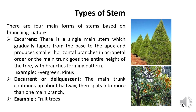There are four main forms of branching: excurrent, decurrent, colic and culm. In excurrent branching, there is a single main stem which gradually tapers from base to apex and produces smaller horizontal branches in acropetal order — acropetal means developing upward toward the apex. The main trunk goes the entire height of the tree with branches forming a pattern, for example evergreen conifers. In decurrent branching, the main trunk continues up about halfway then splits into more than one main branch, forming a spreading crown of multiple stems. The tree trunk divides into many large lateral branches forming an umbrella-shaped pattern, for example fruit trees.